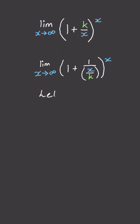The reason we do this is so that we can define a variable u, which is x divided by k. And plugging this into our expression leads to 1 plus 1 divided by u all to the power of k times u.